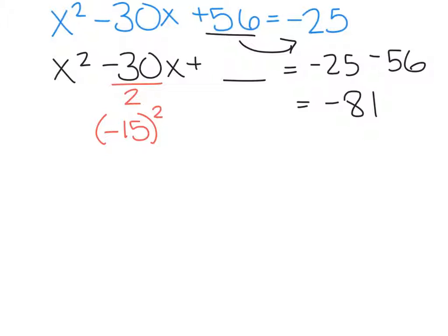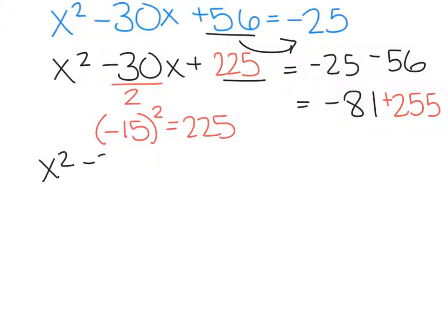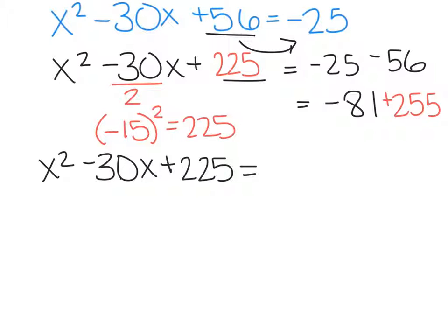We have to remember to just square it. So 15 squared equals 225, so that means we have to add 225 to both sides of our equation. We have to add it to this side and we have to add it to this side. So we have x squared minus 30x plus 225 equals negative 81 plus 225.